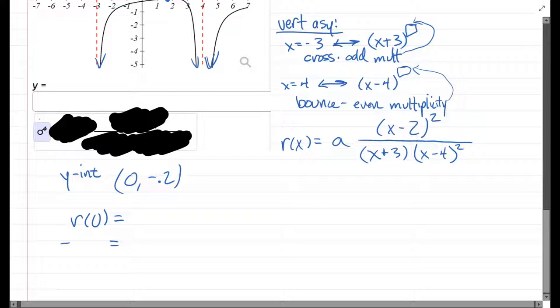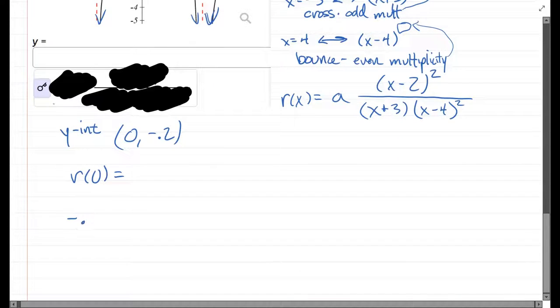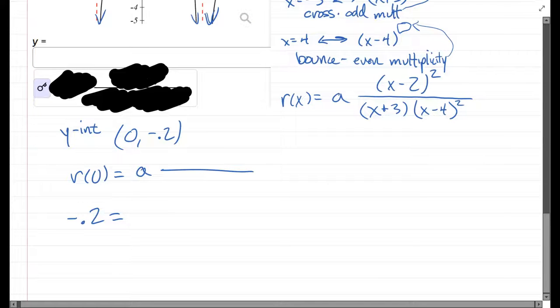And on the right side what we get: negative 0.2 equals, okay, so now I'm going to use the function, just put in zero in the three places that I see x. So zero minus two is just minus two squared. This is zero plus three, which is three. Zero minus four is minus four, and that's squared.